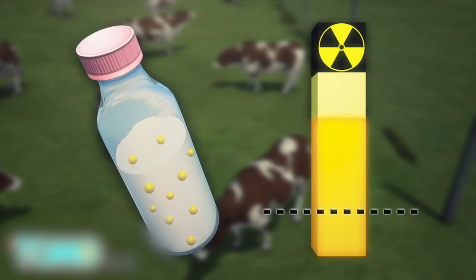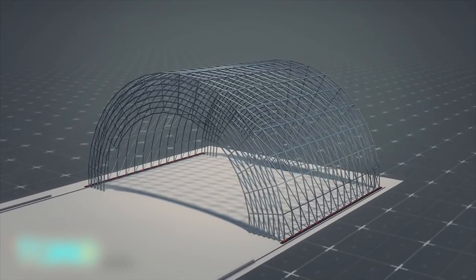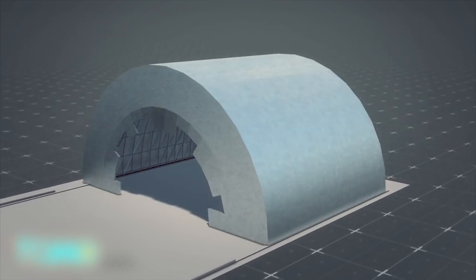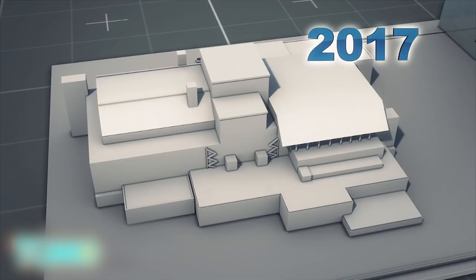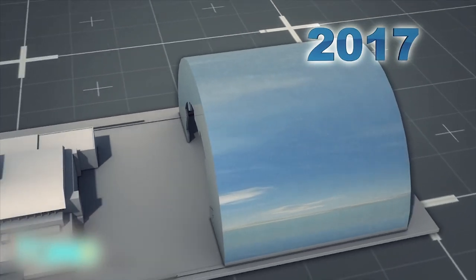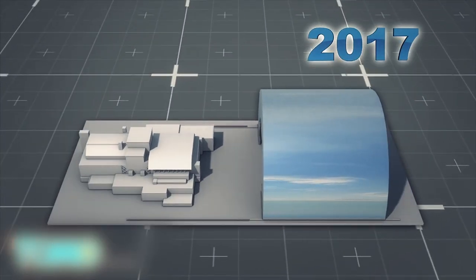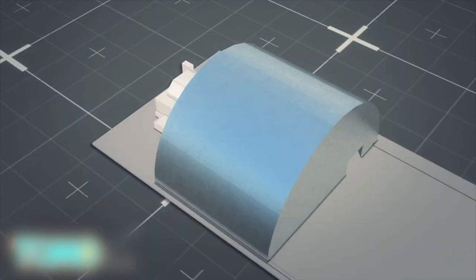The sarcophagus has since deteriorated and engineers are currently building a giant stainless steel arch more than 350 feet high and 500 feet long to replace it. Called the new safe confinement, the 36,000-ton structure will be wheeled in place upon completion in 2017, effectively sealing the sarcophagus. Giant hover cranes in the arch will then disassemble and clean up the exploded reactor contained inside.